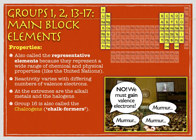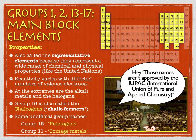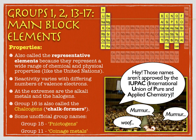Group 16 are often known as the Chalcogens, the chalk-formers — that's an official name. Some unofficial names on the periodic table would be Group 15, the Pnictogens, and Group 11, although it's not a main block element, the coinage metals. What makes a name official is that it's recognized by the IUPAC, the International Union of Pure and Applied Chemistry. So if you want to name an element, you've got to get past them.